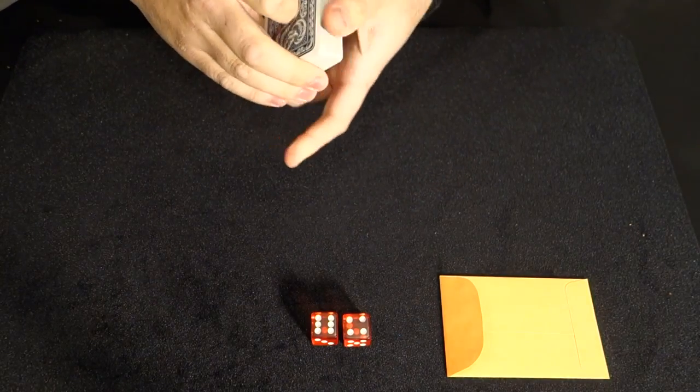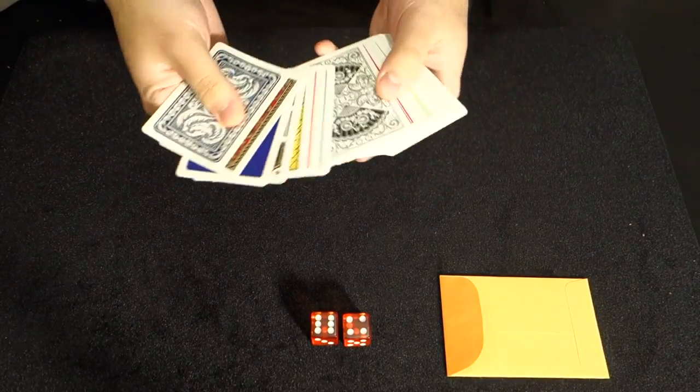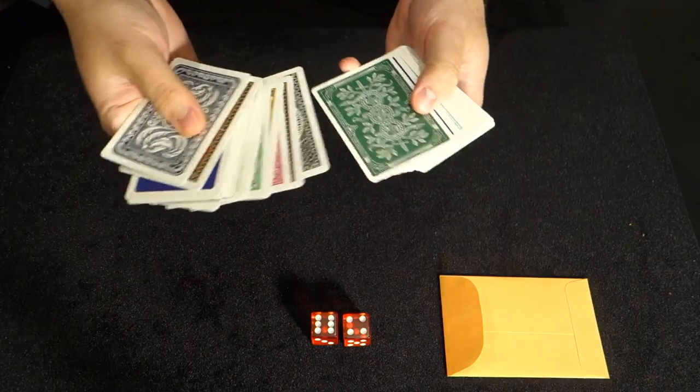The same way, like, if I were to ask you to think of a card right now, odds are you're probably thinking of an ace, a queen, a seven, or a three. They're just common cards that people go to.